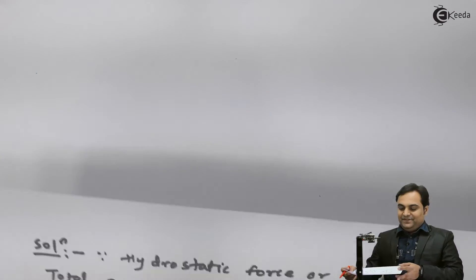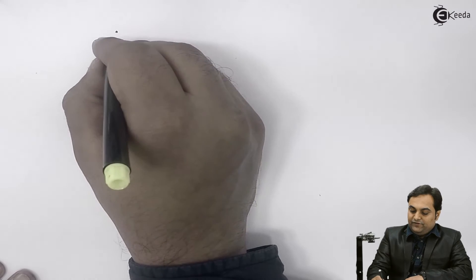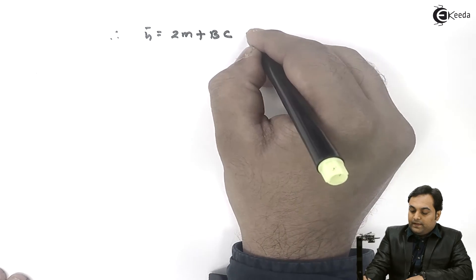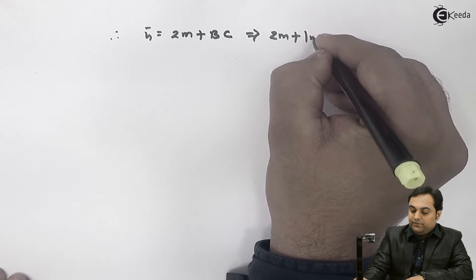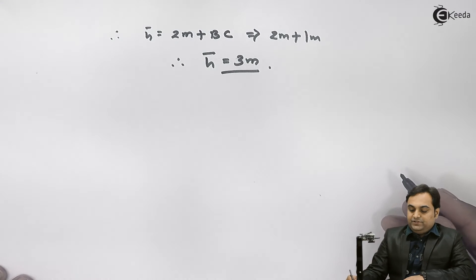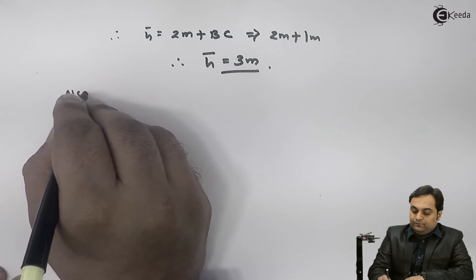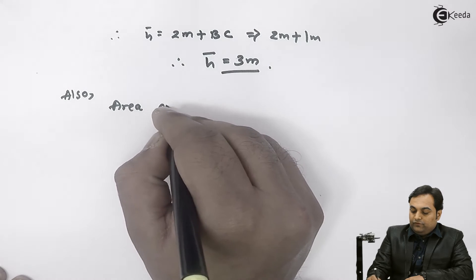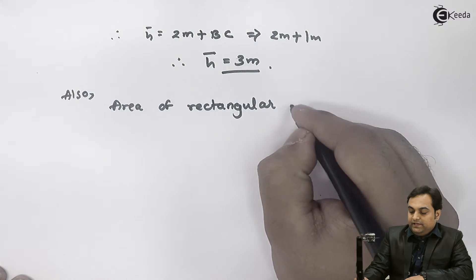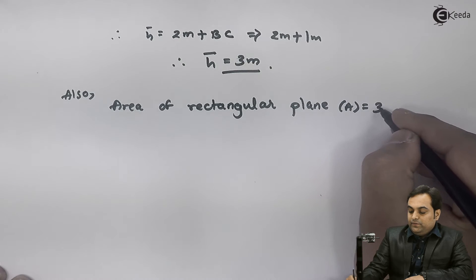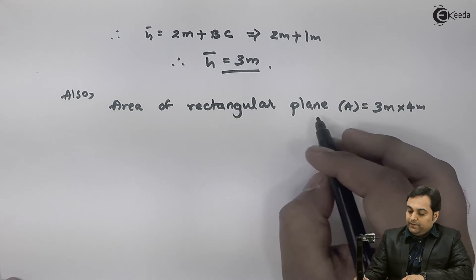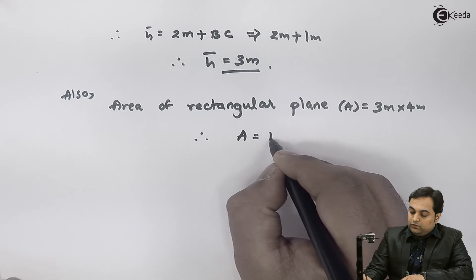After getting BC = 1 meter, h_bar = 2 meter + BC = 2 + 1 = 3 meter. Also, the area of the rectangular plane A = 3 × 4 = 12 m², since 3 meter is the width and 4 meter is the depth.